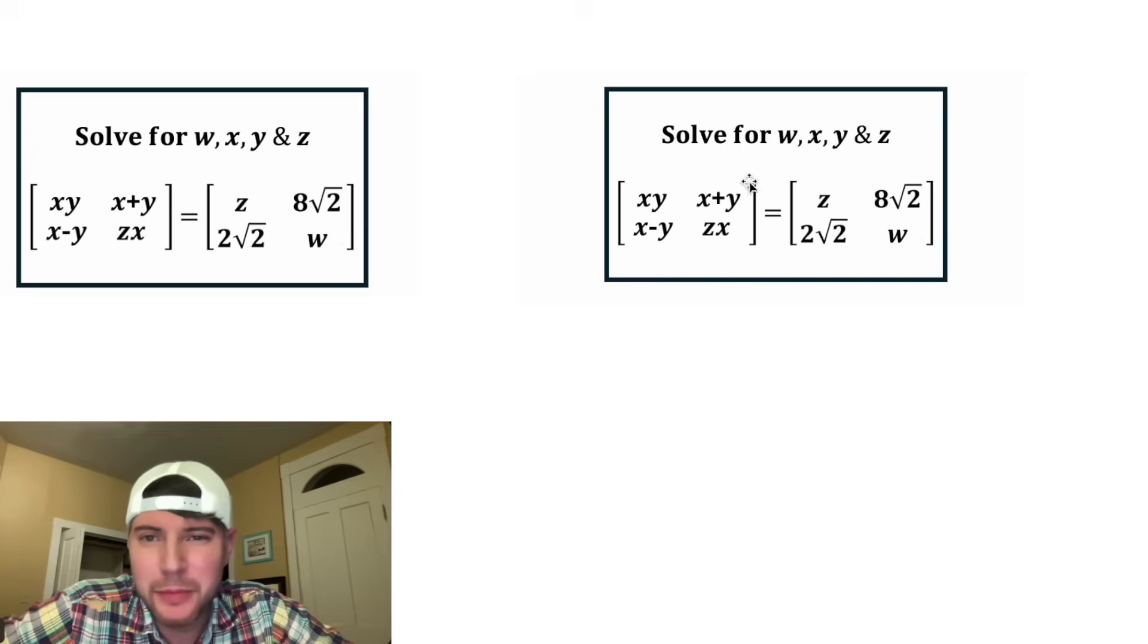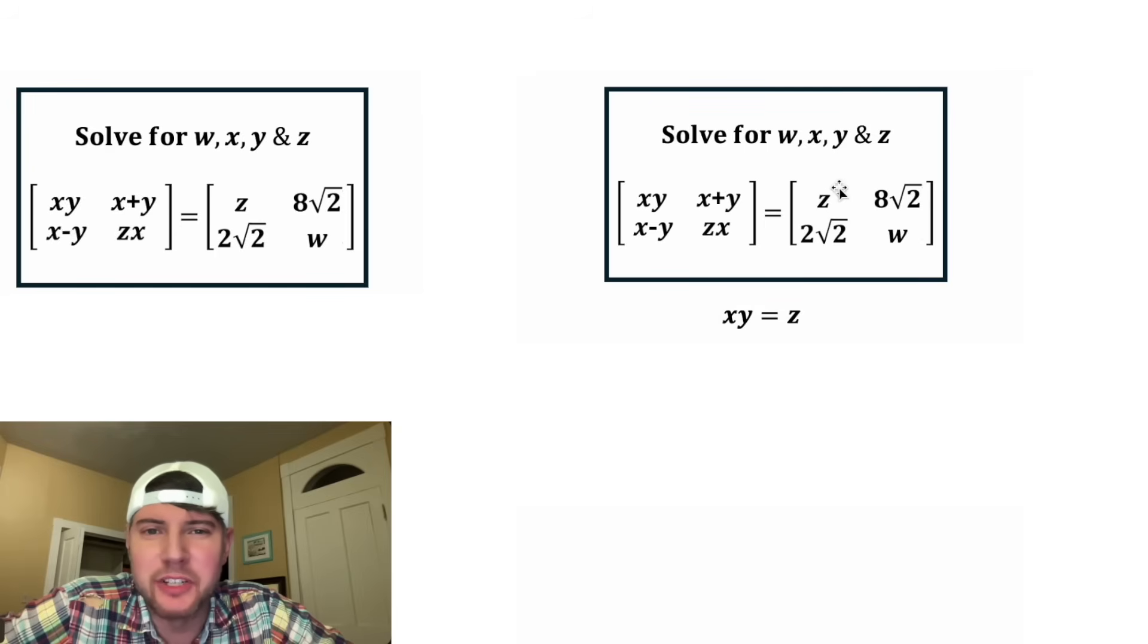For the first step, we'll set each of these corresponding elements equal to each other. We'll do xy equals z, x plus y equals 8 root 2, x minus y equals 2 root 2, and zx equals w.